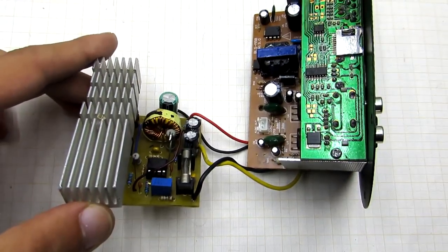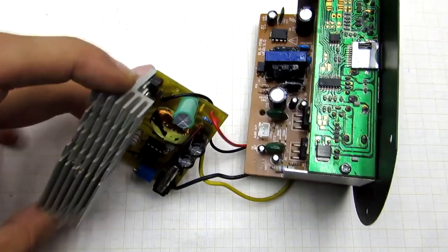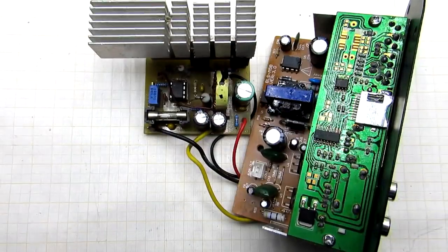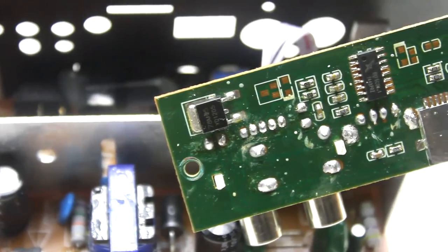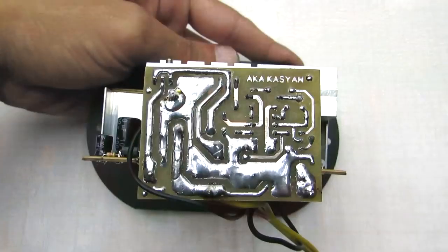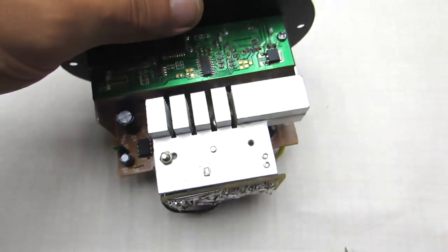Thus, the amplifier board already received not 12 but 18 volts, and this is completely safe. The circuit includes a digital control, but it is powered by a stabilizer of 5 volts, which can safely operate at an input voltage of up to 24 volts.